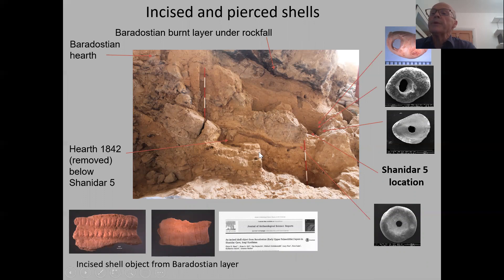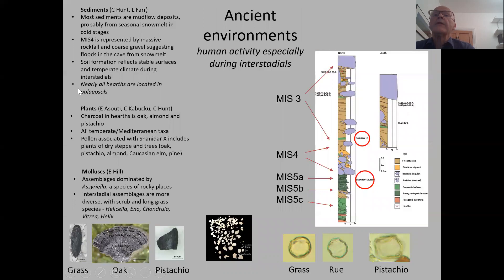The same pattern applies to pierced shells — small beads. We're finding a suite of them above the Shanidar 5 location, and identically one also found below, with Baradostian material beneath the level of these Neanderthal hearths. This is an incised shell object from the Baradostian context we have published from the upper levels.